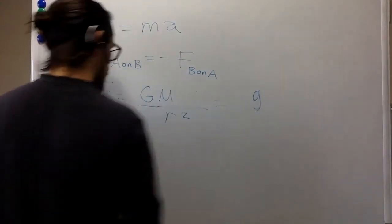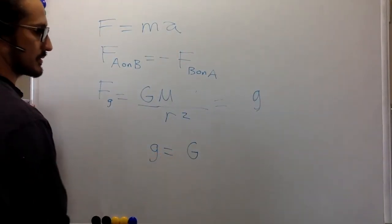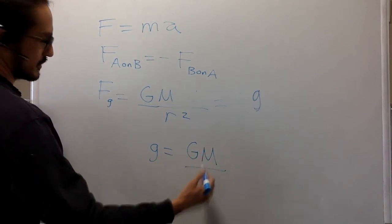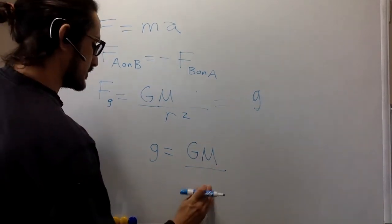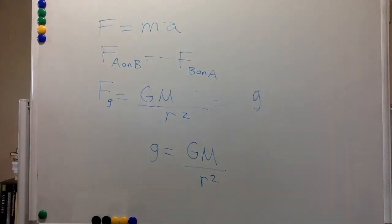And so we get that the acceleration due to gravity is the gravitational constant, mass of the earth, or any body really, divided by the radius of the body, or the separation between two bodies squared.